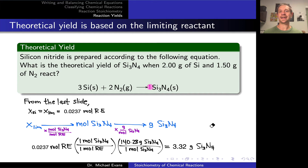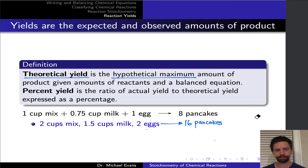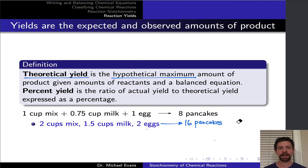Reactions must obey conservation of mass, so the excess reactant's mass is bounded by that fact. What we calculated — the mass of silicon nitride given the initial conditions — is called the theoretical yield: the hypothetical maximum amount of product assuming all of the limiting reactant is consumed. In chemistry, something always goes wrong, so percent yield is a measure of how well we did relative to the theoretical yield.